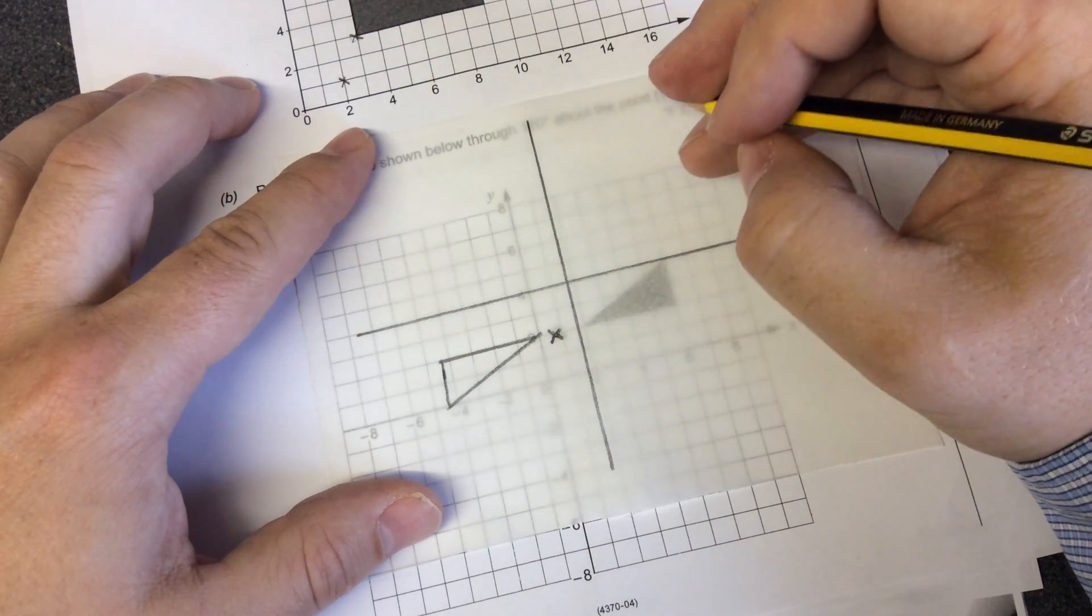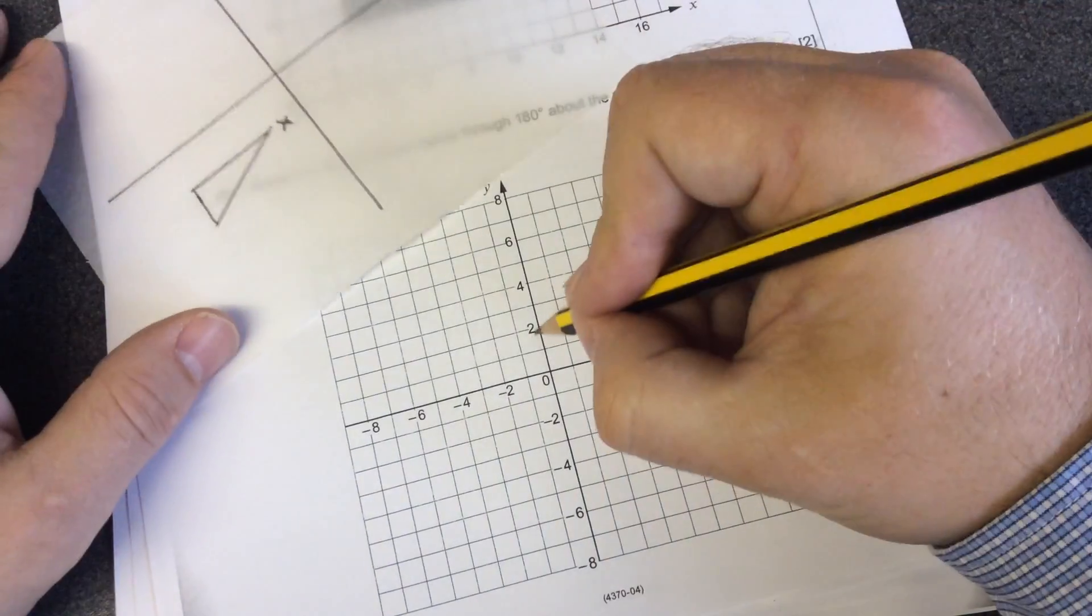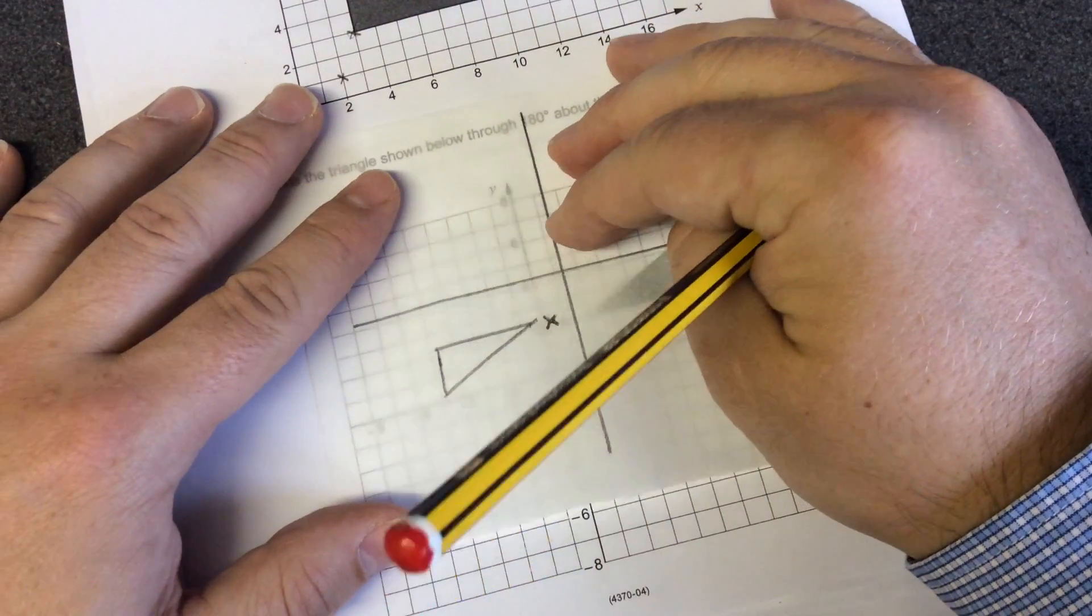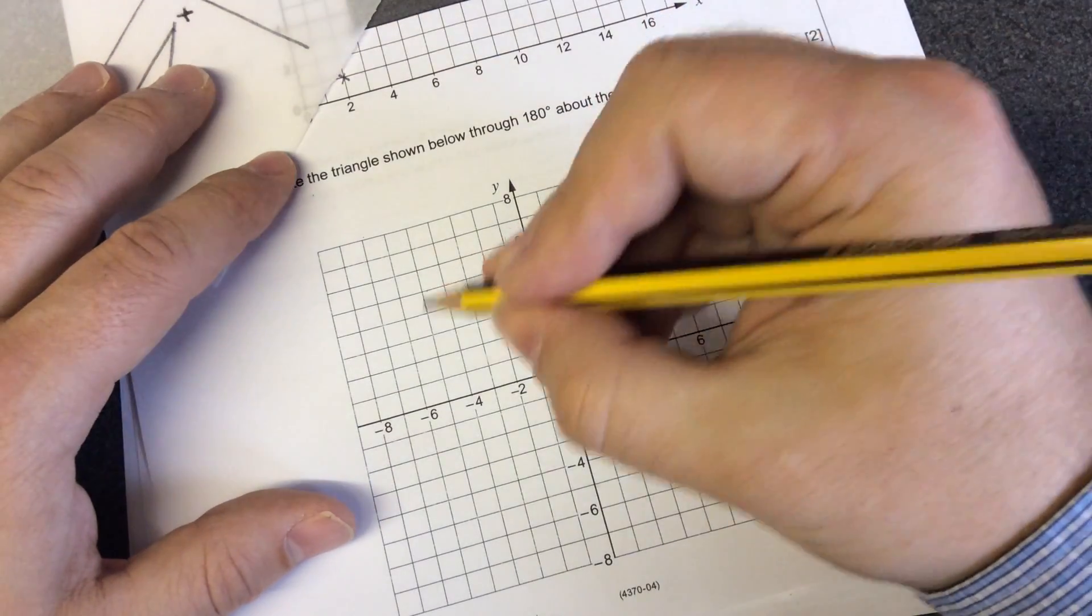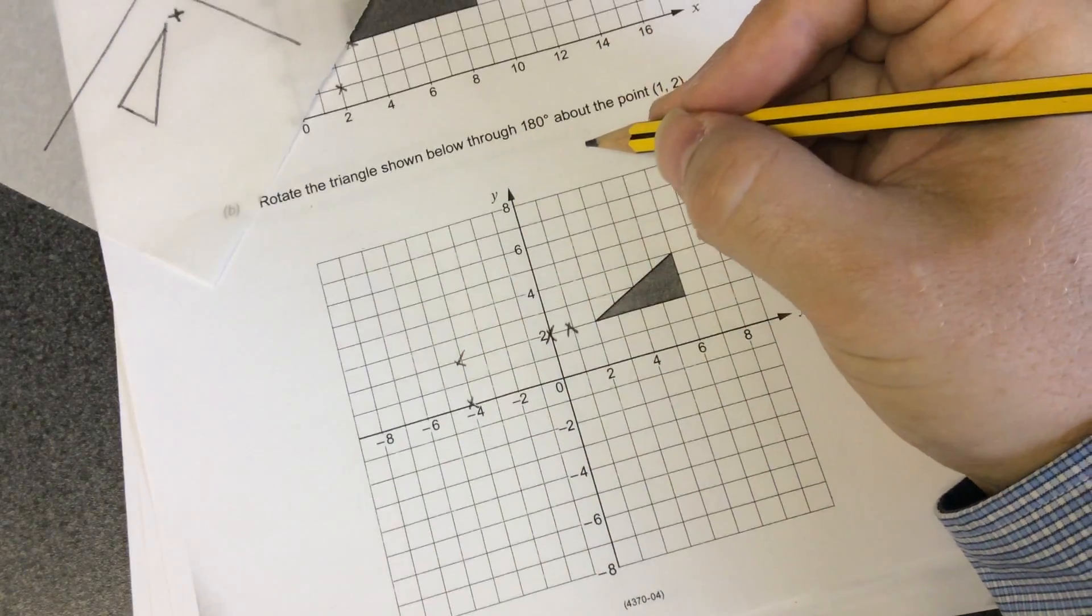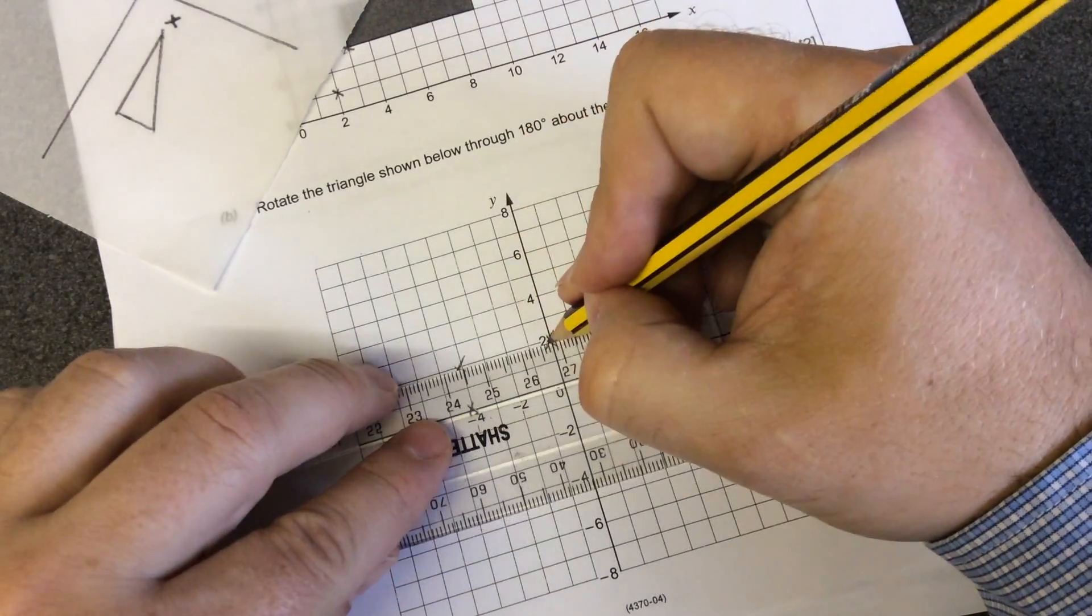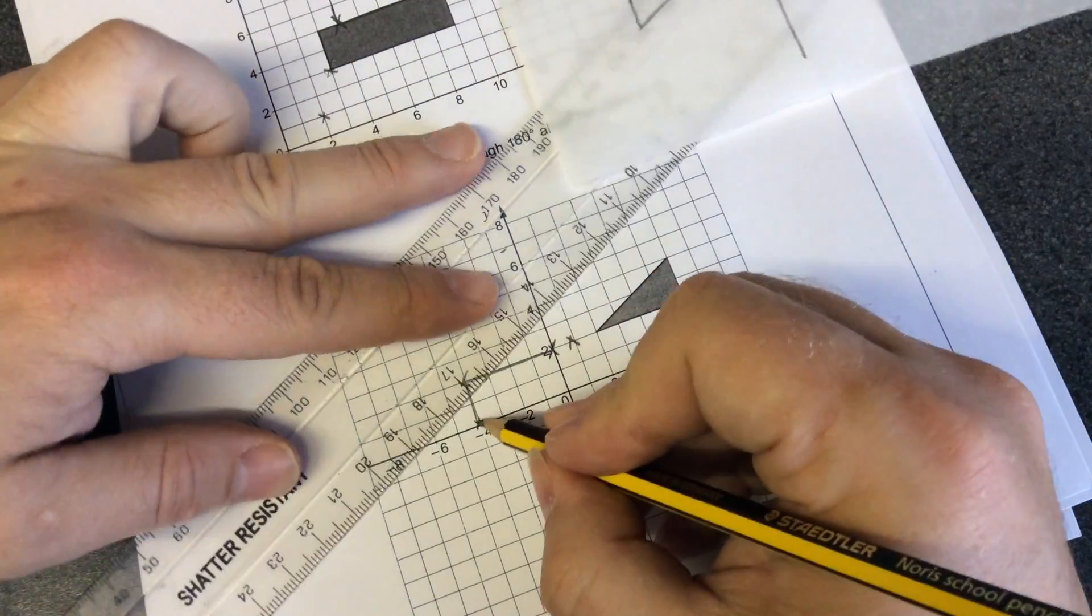So the shape ends up there. It starts on 2, goes across to 4, minus 4, and then it goes up there. And then I can trace my sheet, my diagram onto my sheet.